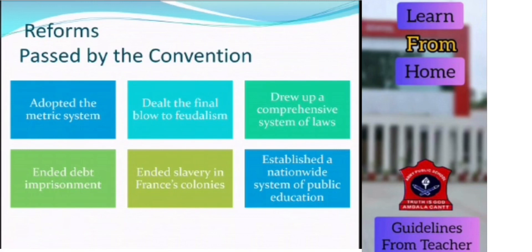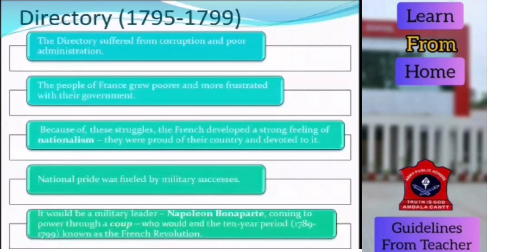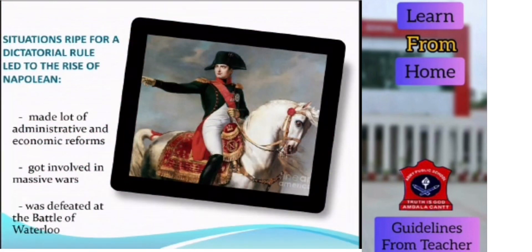Changes brought by the Convention included adopting the metric system, dealing the final blow to feudalism, establishing a system of laws, abolishing slavery, and introducing a public education system. The Directory suffered from corruption. People grew poorer and more frustrated. The feeling of nationalism was fueled by the military successes of Napoleon Bonaparte, and conditions were ripe for a dictatorial rule, which led to the rise of Napoleon.